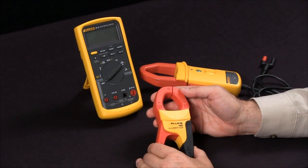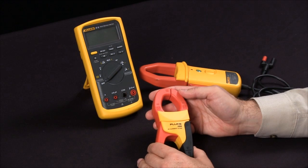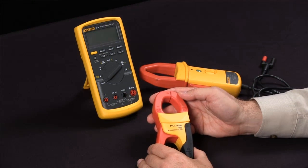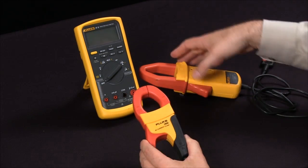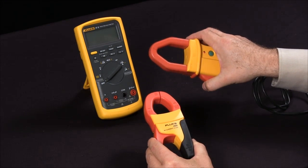Today I'd like to discuss one of the many ways you can extend the capabilities of your Fluke digital multimeter. At Fluke we have both AC as well as AC and DC current measuring capabilities.